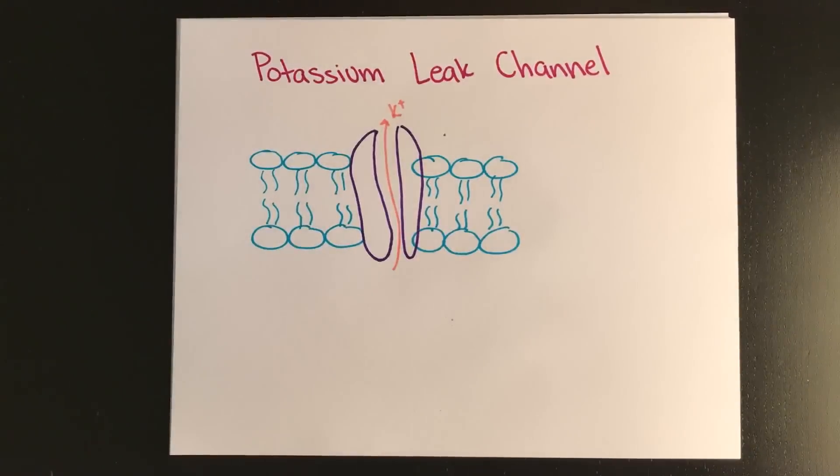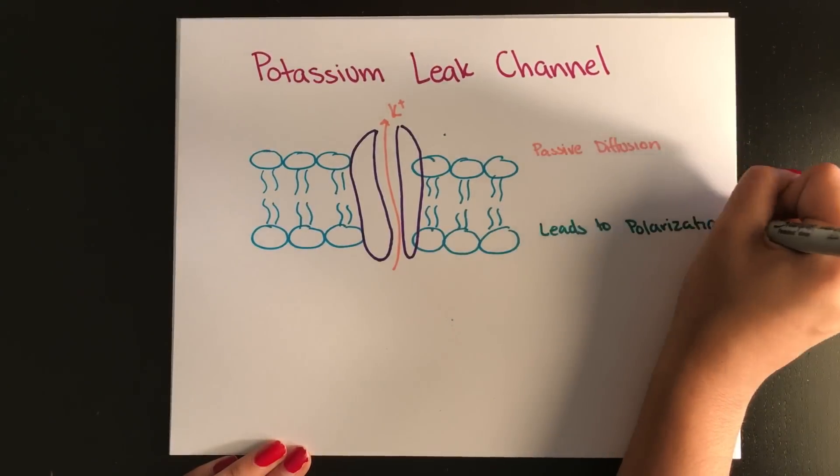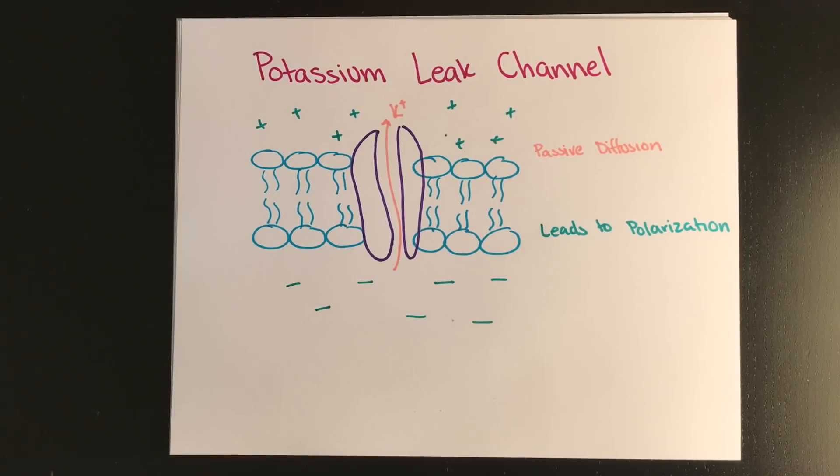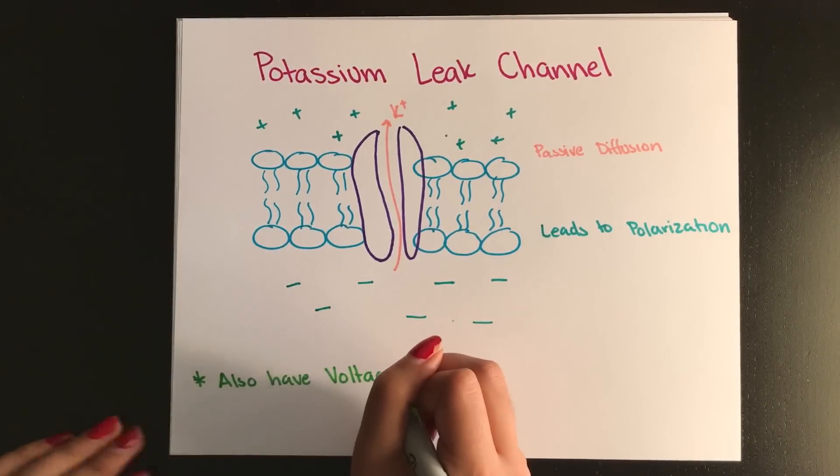When all of these positive ions are going out of the cell and the sodium ions are being pumped out, so you have your potassium through the leak channels, your sodium actively transported, now the inside is relatively more negatively charged to the outside.